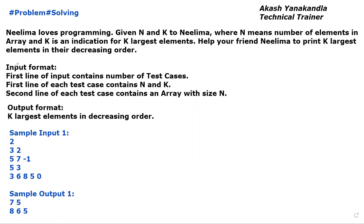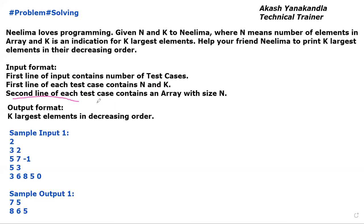Now let's see the input format. In the input format, the first line contains the number of test cases. Then, for each test case, the first line contains capital N and K. We need to iterate for each test case.